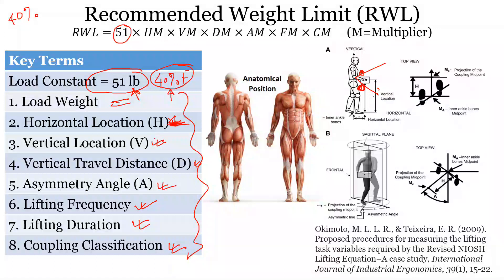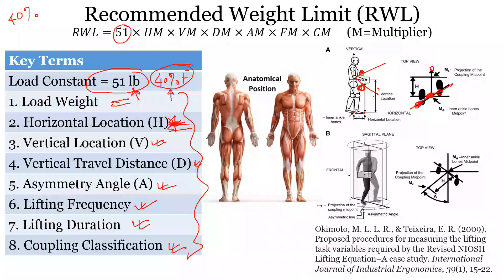One of the most commonly mismeasured factors is horizontal distance — the distance from the body to the object. You draw a line between the two ankle joints, and the horizontal distance is measured from the midpoint of that ankle joint line to the object. The 'object' reference point is actually the knuckle of the person, not the front or back of the object.